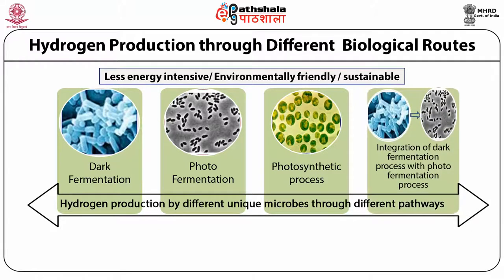Coming to process four — the hybrid process — this is the integration of dark fermentation with the photo fermentation process. The significance of this process is that the spent effluent or waste discharge left out after hydrogen production from dark fermentation serves as a good source of substrate or feedstock for production of hydrogen through photo fermentation. Hence, after completion of the dark fermentation process, the waste effluent can be used to produce further hydrogen through the photo fermentation process. In the module on microbial production of hydrogen, we will study in detail about the life pathways and the specific microbes which have got the potential to produce hydrogen.